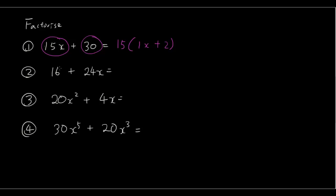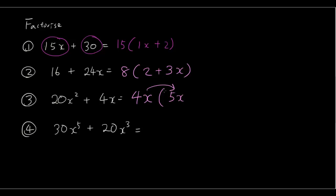Now let's do the second one. We have 16 and 24 — 8 is the highest common factor: 8 times 2 is 16, and 8 times 3x is 24x. The third one: notice that we have both x squared and x, so not only are you going to write 4 in the front, but you're also going to write x at the front, because x is a factor for both x and x squared. So 4x times 5x is 20x squared, and 4x times 1 is 4x.